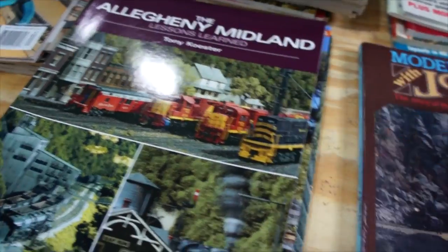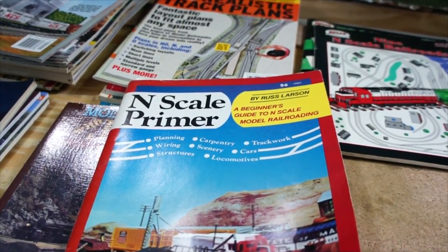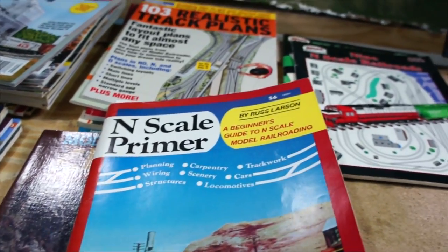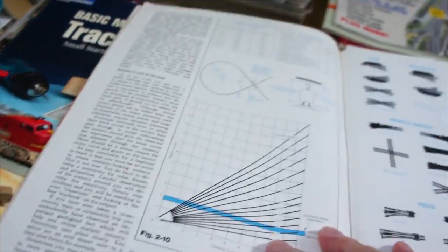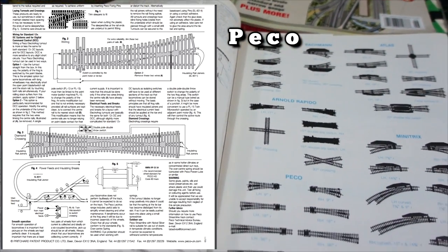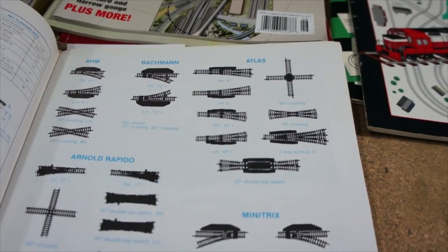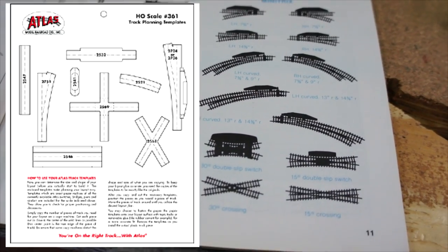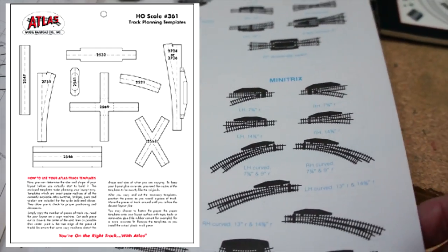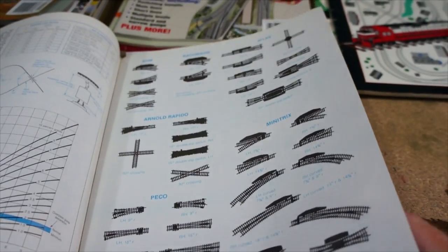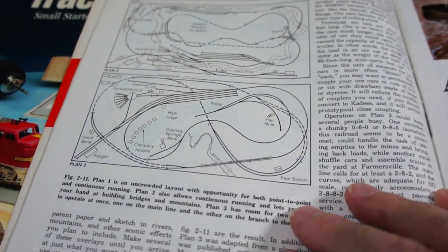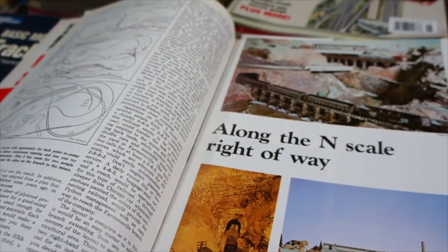From the N-Scale Primer, written by Russ Larson and published 40 years ago, you can see they gave you a wealth of information even back then. Today you can also go online with Atlas, Peco, and Kato to get track specifications and sizes. This primer alone has three different track plans available, so in these books you're going to get a good idea of what you want to do.